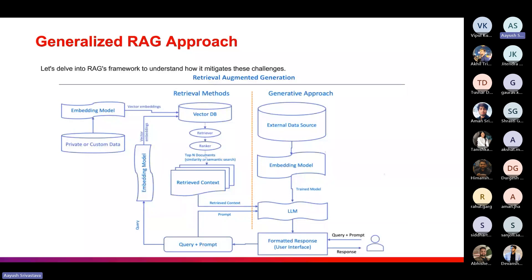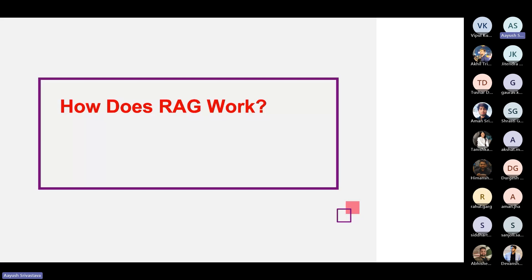Now let's look at the generalized RAG architecture. On the right side is our generative approach — the LLM model. From an architectural standpoint, we are not changing anything on the generative side; we are simply combining retrieval methods with the generative approach, resulting in a new approach called RAG. We'll look at every part of this architecture in detail in the following slides.